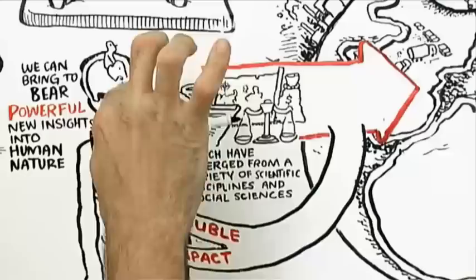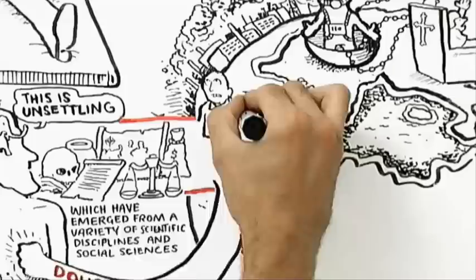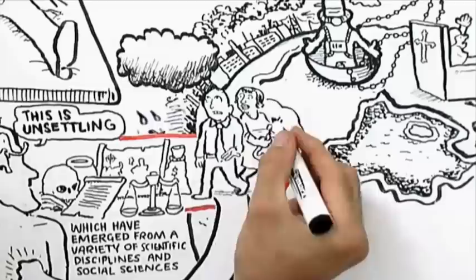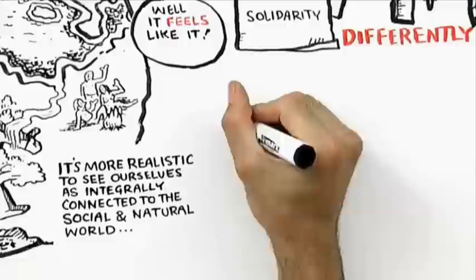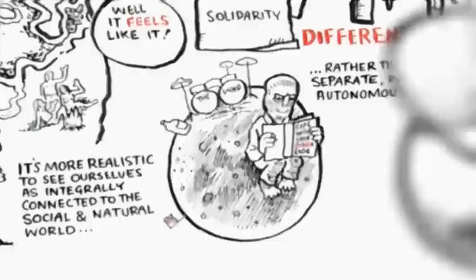And I think that insights into human nature have a similar double impact, also unsettling our intuitive sense of ourself in the world. Most of our behavior, including social interaction, is the result of us responding automatically to the world around us, rather than the outcome of conscious decision-making. And in this sense, it's more realistic to see ourselves as integrally connected to the social and natural world, rather than as a separate, wholly autonomous entity.